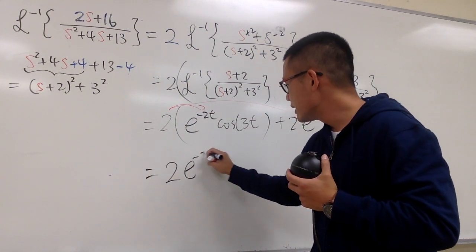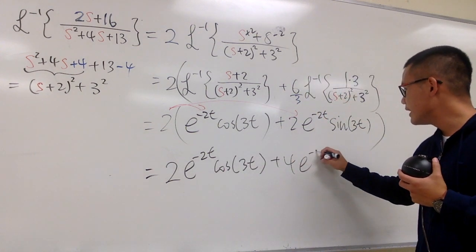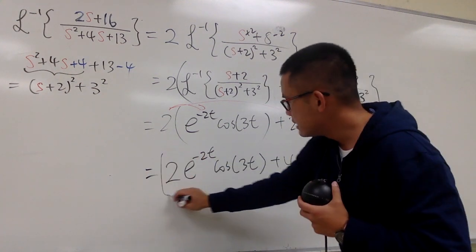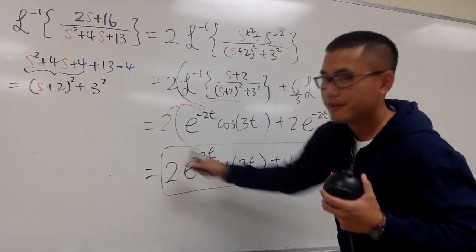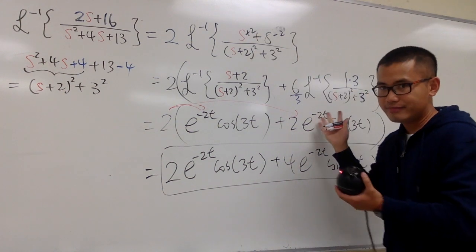So, we have 2 e to the negative 2t, cosine of 3t. And then plus 4 e to the negative 2t, sine of 3t. And this is it. Right? And once again, this is not power, this is 8 minus 2, and this is s plus 2. That's it.